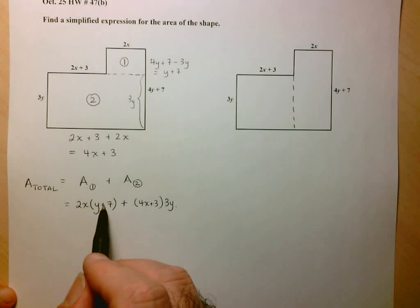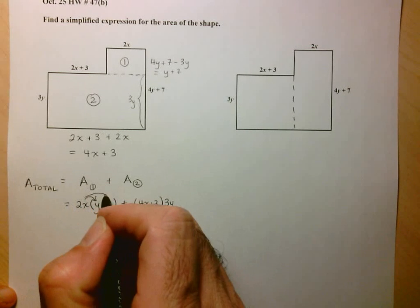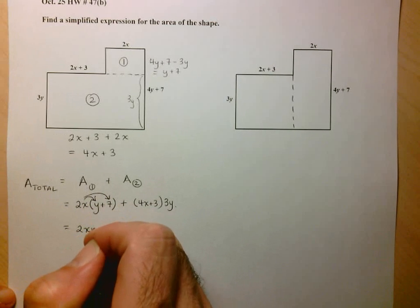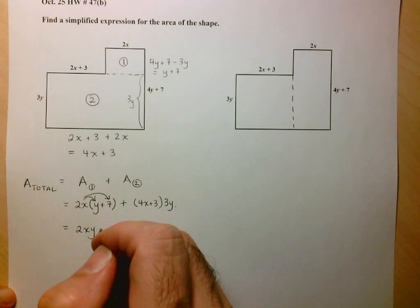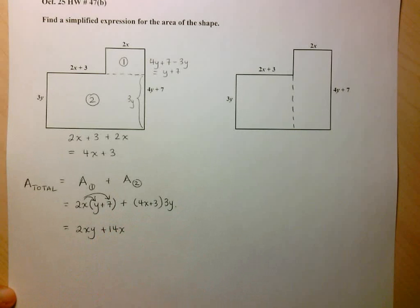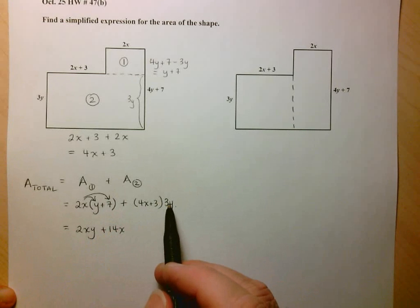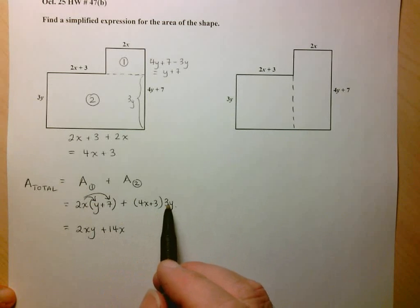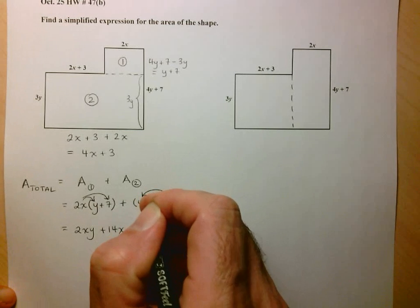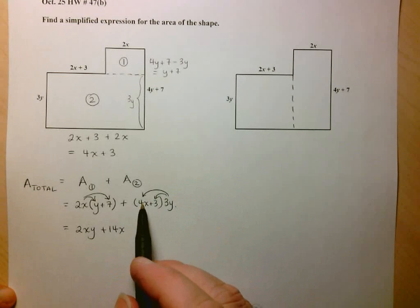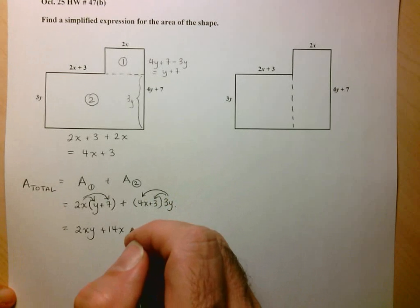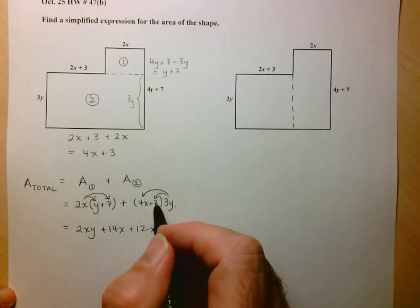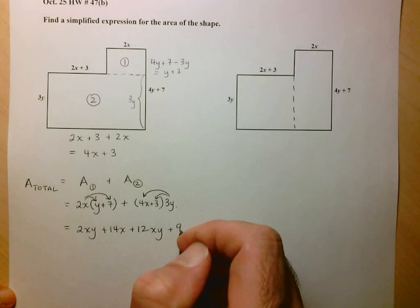Here I'm multiplying a monomial by a polynomial, so I know I have to use the distributive property. So here 2x times y, that's just 2xy. And then 2x times 7 is going to give me plus 14x. Now here I have, again, a monomial times a polynomial. Remember, it doesn't matter in what order I do the multiplication. So again, I'm multiplying this monomial, I have to use the distributive property. So here we have 4x times 3y. So 4 times 3 is 12, positive 12, x times y, no simplification that we can do. And then here, we've got 3 times 3y gives me 9y.